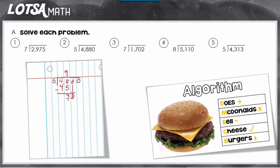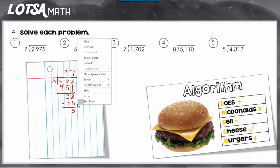I'm on round 2 and my new dividend is 38. 38 divided by 5 is 7. Multiply: 7 times 5 is 35. Subtract: 38 minus 35. Compare — make sure 3 is less than 5. And if it is, you can go ahead and bring down and get ready for the last round.